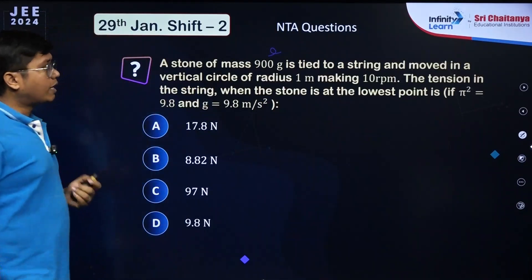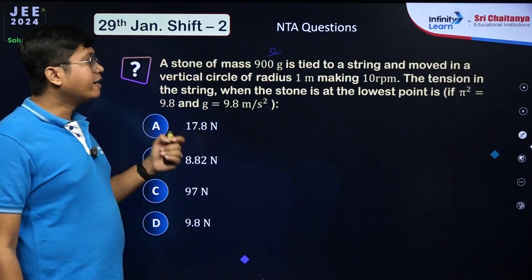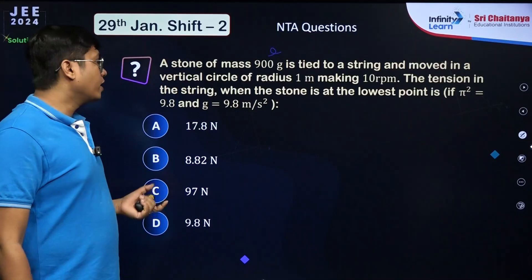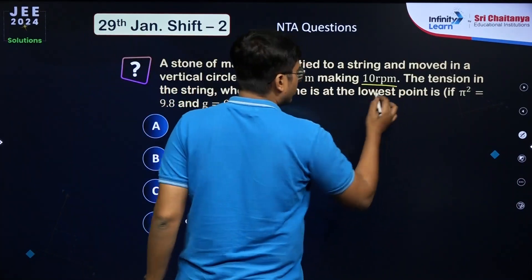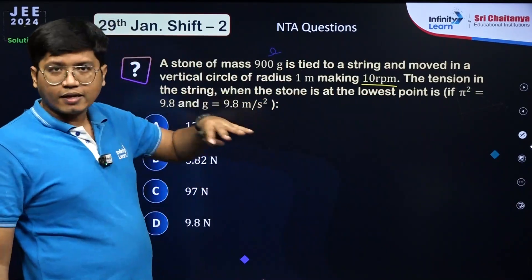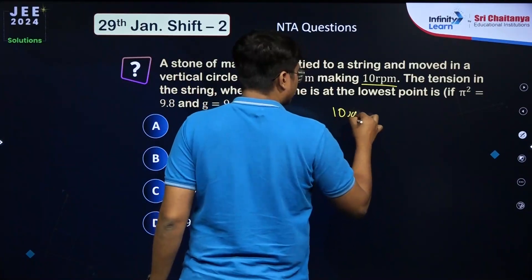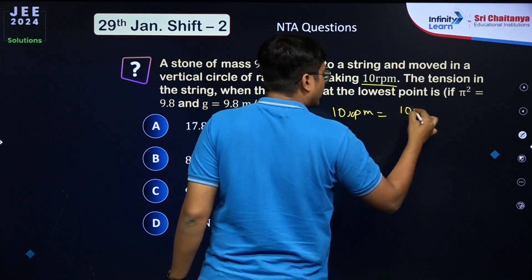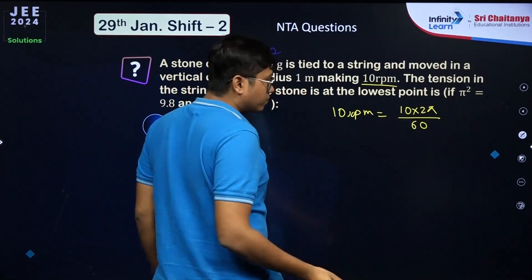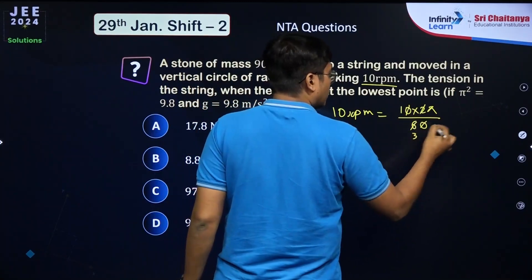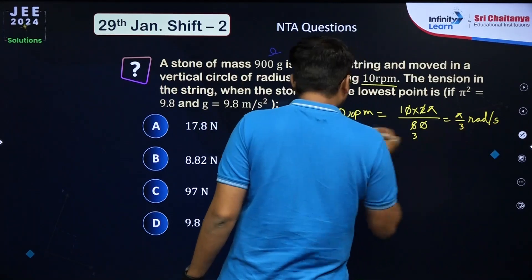A stone of mass 900 g is tied to a string and moved in a vertical circle of radius 1 m at 10 revolutions per minute. First, convert: ω = 10×2π/60 = π/3 rad/s.